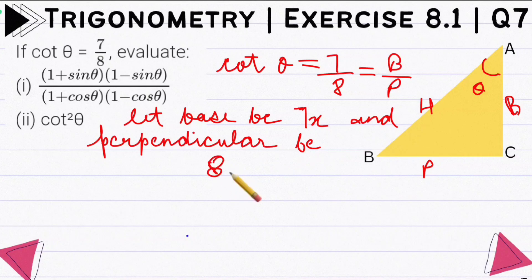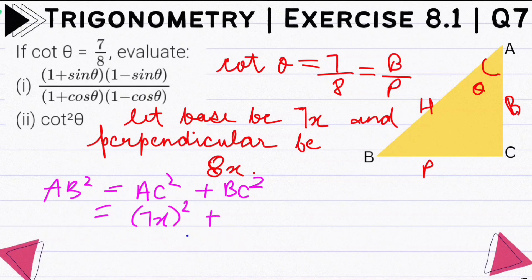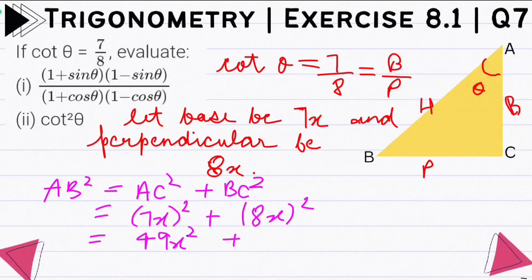So we have AB square, and this is the longest side (hypotenuse). AB square is equal to AC square plus BC square. So AB square equals (7x)² plus (8x)², which gives 49x² plus 64x² equals 113x².